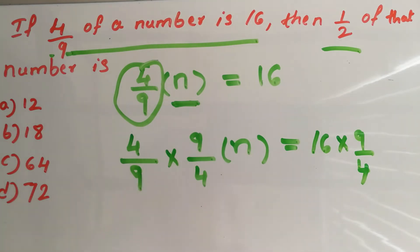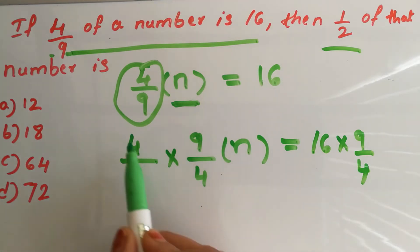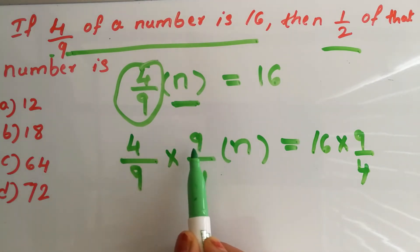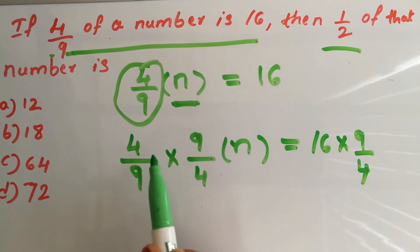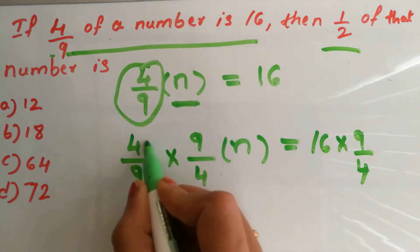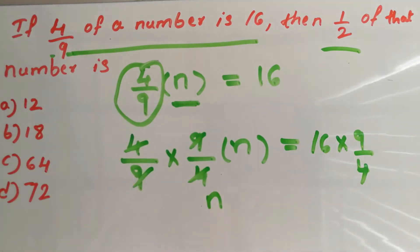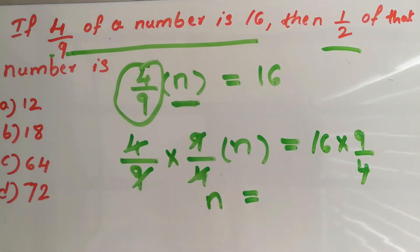Inverse of 4 over 9 is 9 over 4. So now 4 over 9 multiplied by 9 over 4 — you can cancel this out. This is nothing but 4 times 9 is 36, and the denominator is also 36. 36 divided by 36 is 1, so this is 1 times n, which is nothing but n. This cancels. We got n. Our left-hand side is n, that is our unknown number.